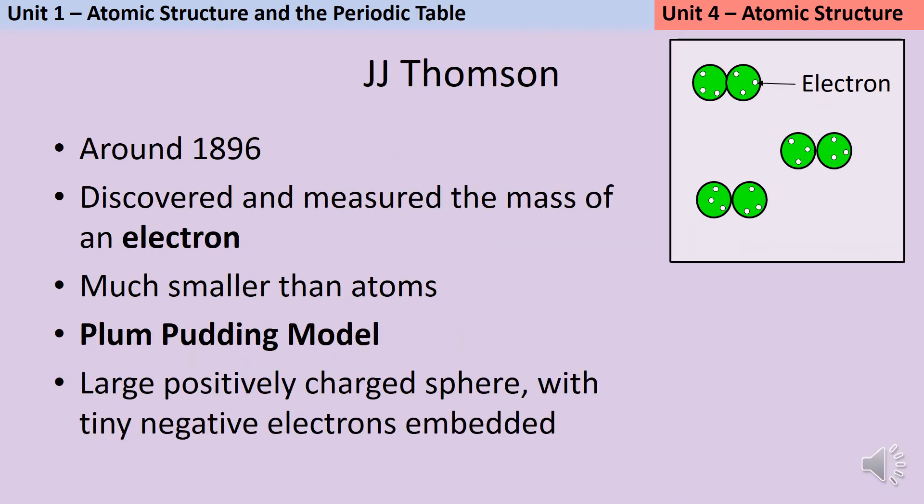About 50 years after Dalton died, the electron was discovered. JJ Thompson discovered the electron and measured its mass, showing that it was a lot smaller than the mass of an atom. We stopped being able to think of atoms as indivisible fundamental particles and started to see that they needed to be broken down further.